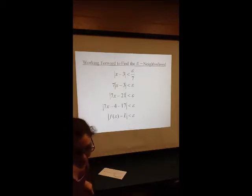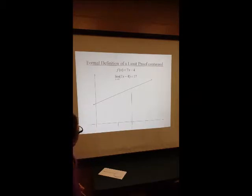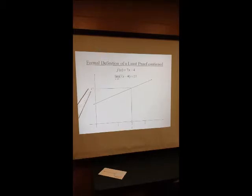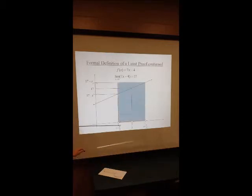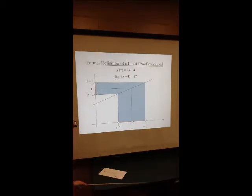We're going to show this on the graph. f of x is graphed here, and x is approaching 3. We are proving that 17 is the limit of f of x as x approaches 3. When delta equals epsilon over 7, this delta-neighborhood of 3 maps perfectly into an epsilon-neighborhood of 17, with absolutely no room to spare. So what if we had a value of delta that was smaller? How can we prove that that delta-neighborhood will still map into the epsilon-neighborhood of 17?